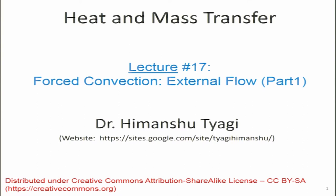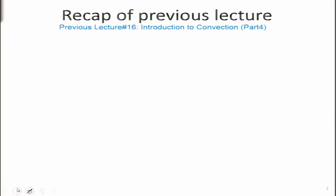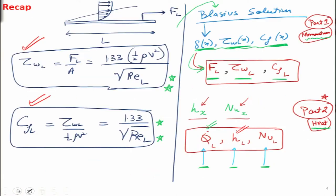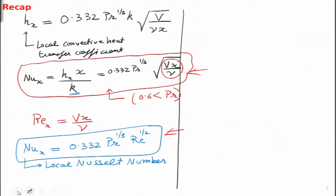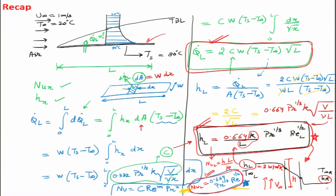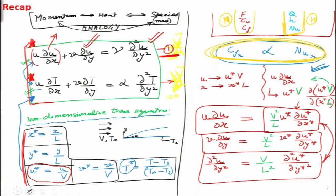We will look at one aspect of forced convection which is for external flows. Before we do that, let us do a recap of what we have done in the last class — the fundamentals of convection. We looked at flow past a flat plate and how momentum and heat transfer parameters vary. Using the Blasius solution, we found the overall Nusselt number and the overall convective heat transfer coefficient, which are very important for engineers to calculate the overall rate of heat transfer from a flat plate to the surrounding fluid.